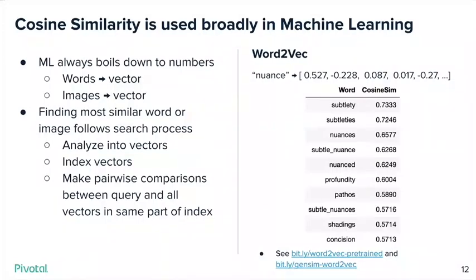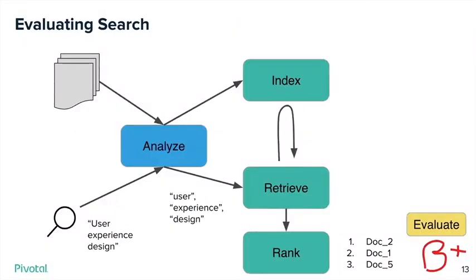That's not the focus of this talk, but now that I've gone over cosine similarity, you actually understand a lot of data science that way. If you want to play with this kind of stuff, it's all open source. We've figured out sophisticated ways of ranking the documents we've retrieved — now let's figure out how we can evaluate them.